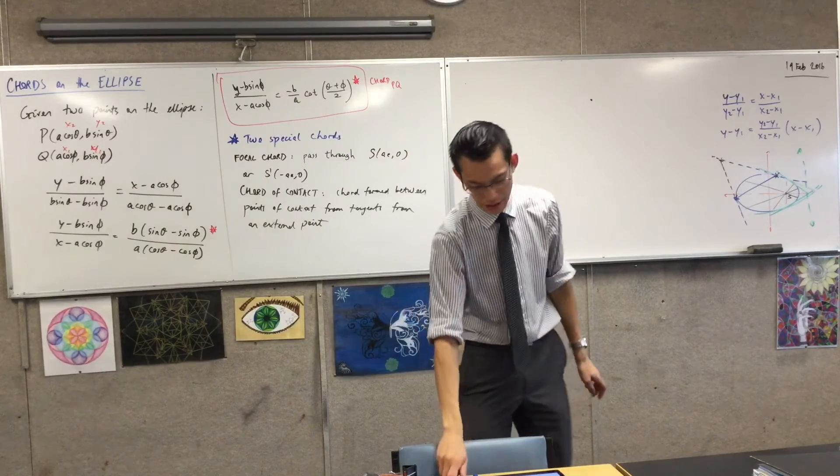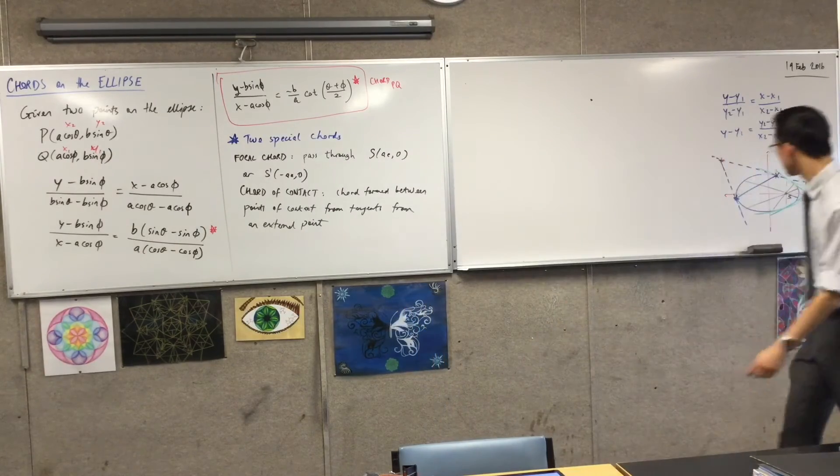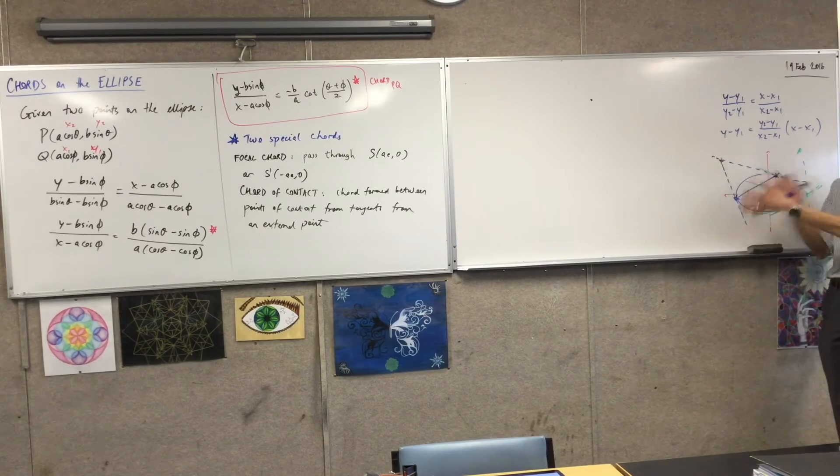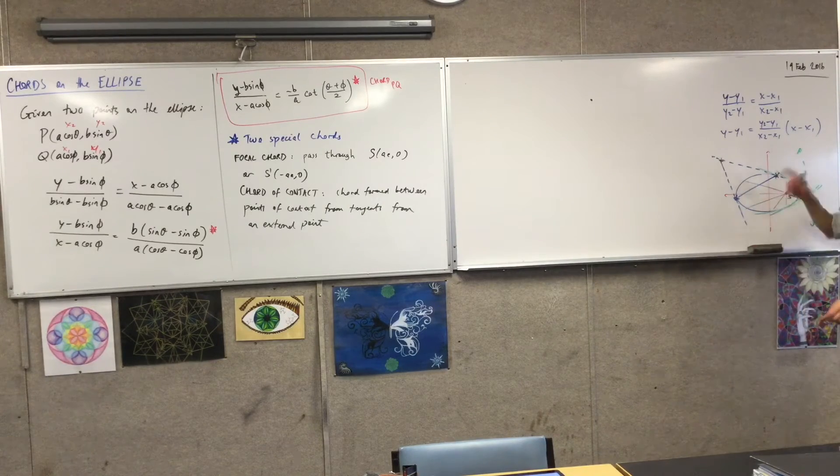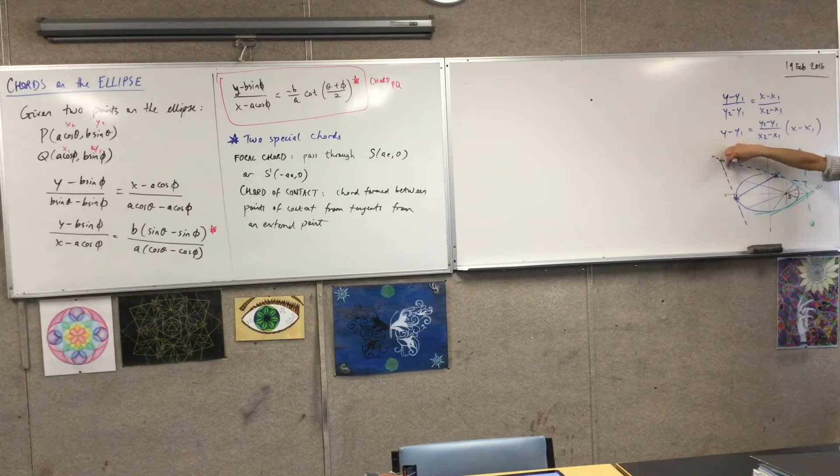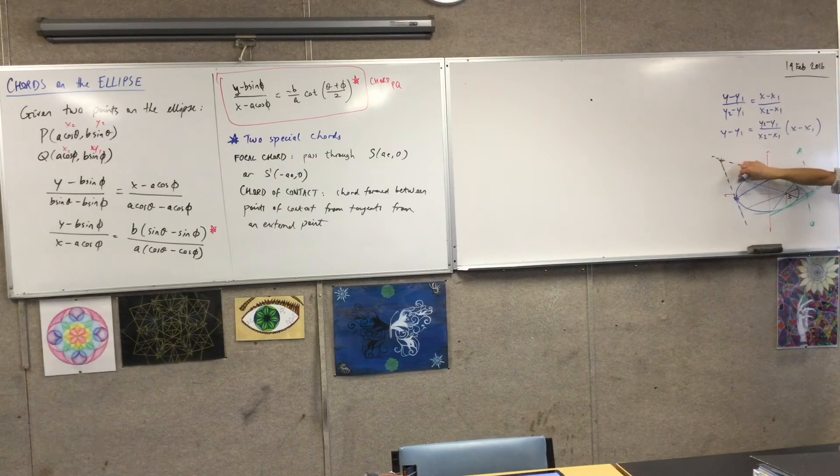Now, this one, it'll be very easy to actually write down the equation of, because I want to remind you of a really fancy piece of geometry that we showed dynamically on the parabola. Do you remember what happened as I took this external point, and if I brought it closer and closer and closer to the ellipse?